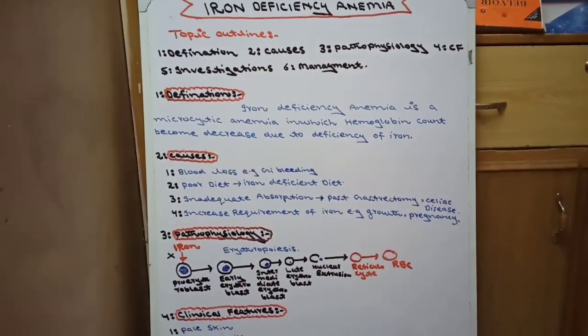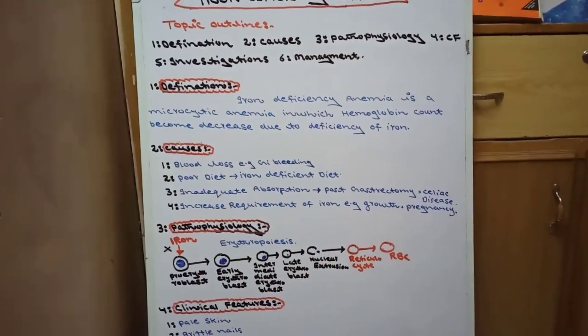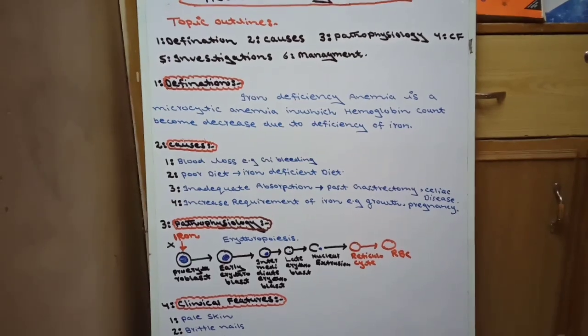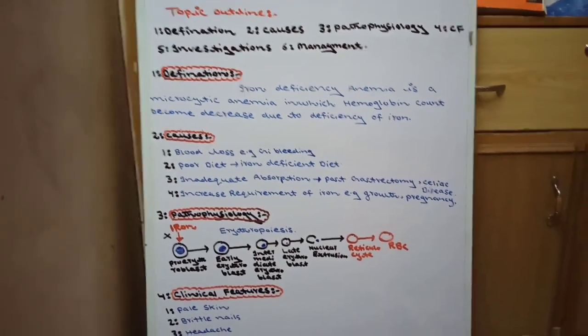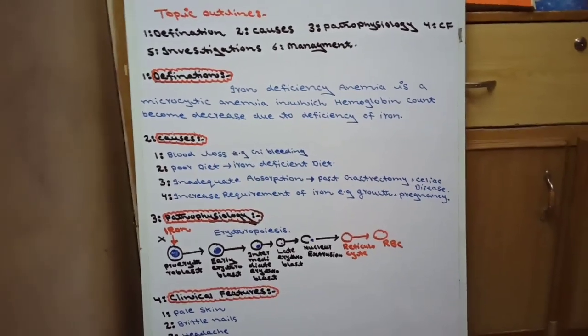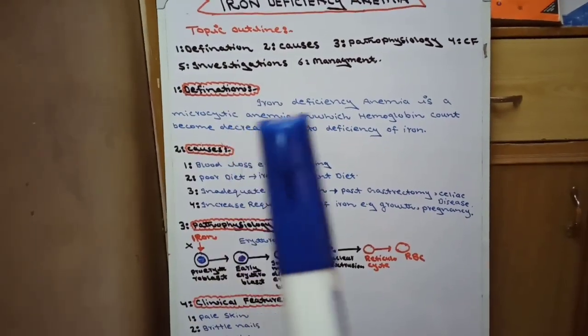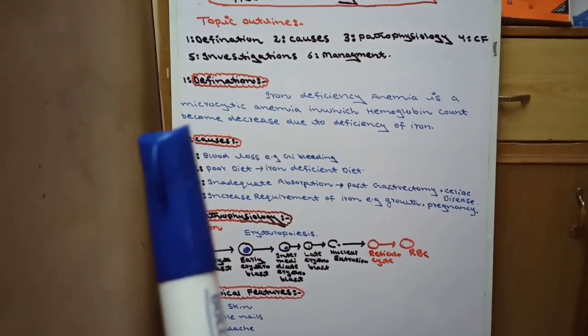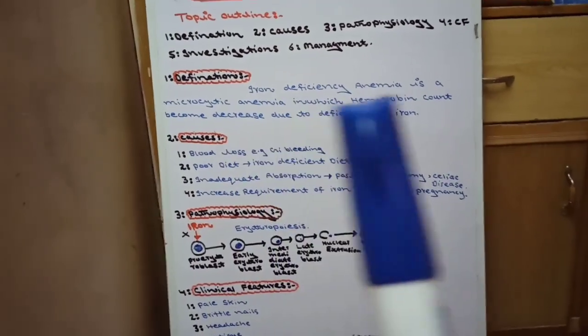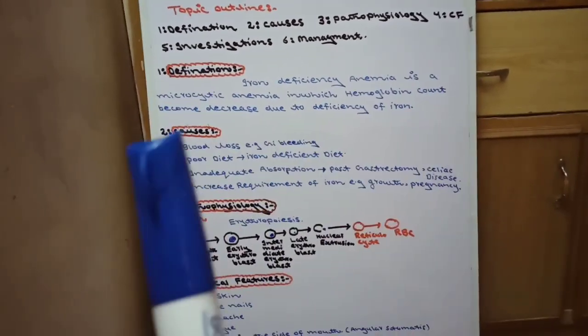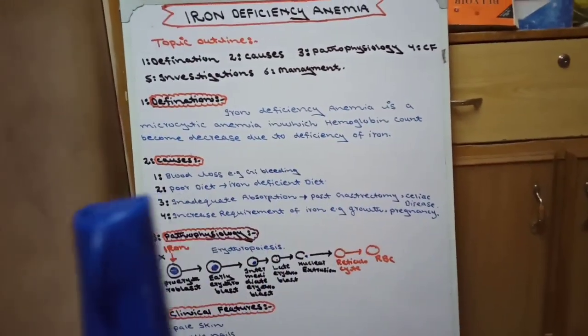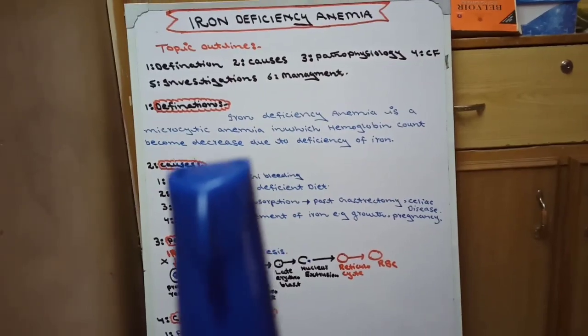Starting with the definition: iron deficiency anemia is a microcytic anemia in which hemoglobin count becomes decreased due to deficiency of iron.